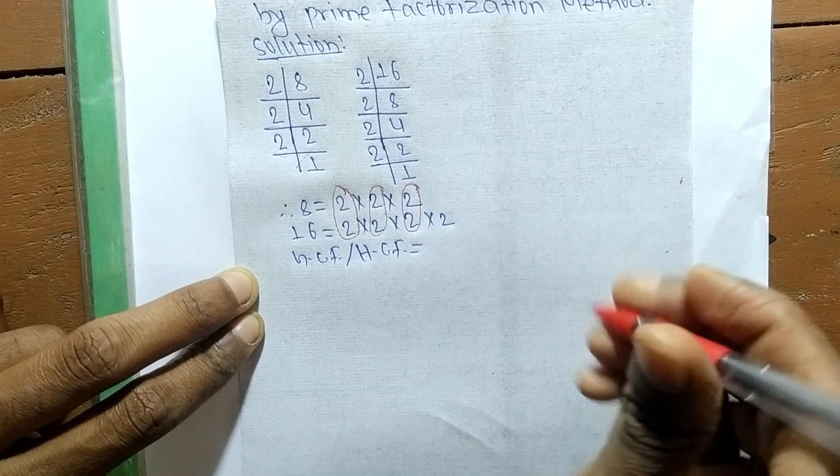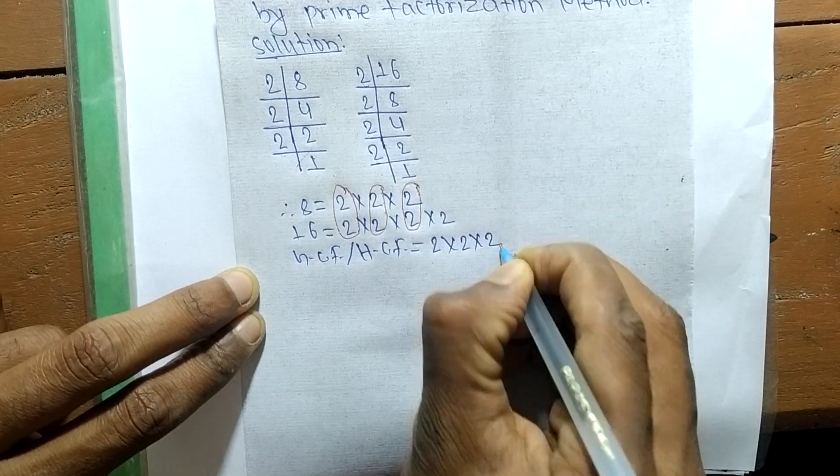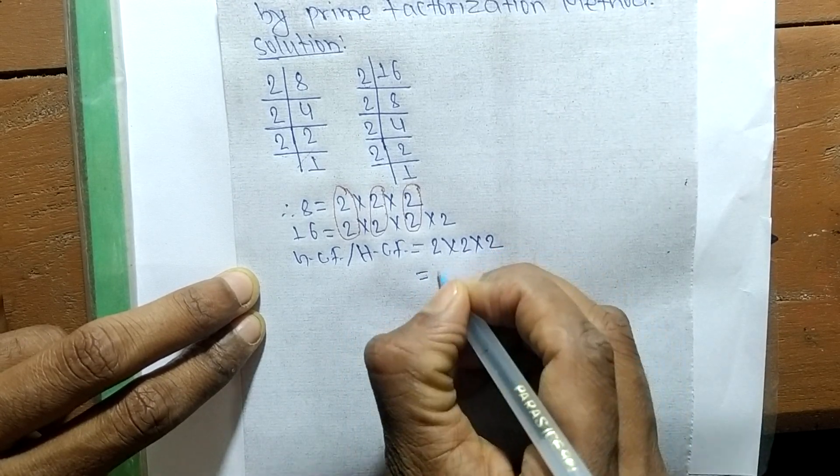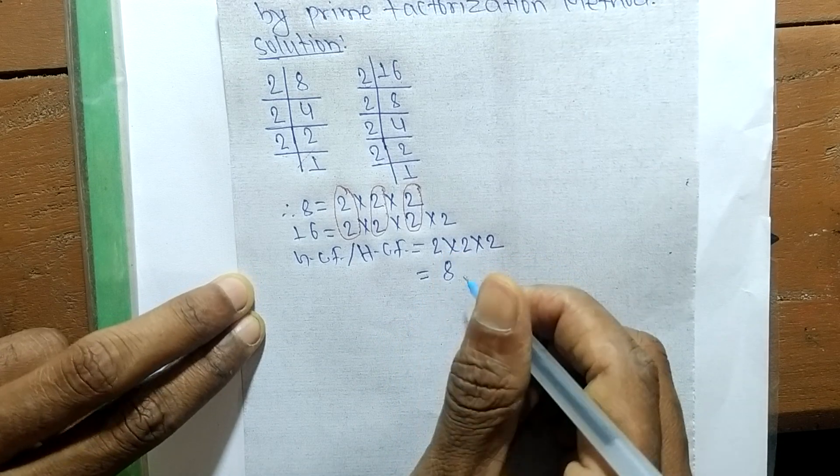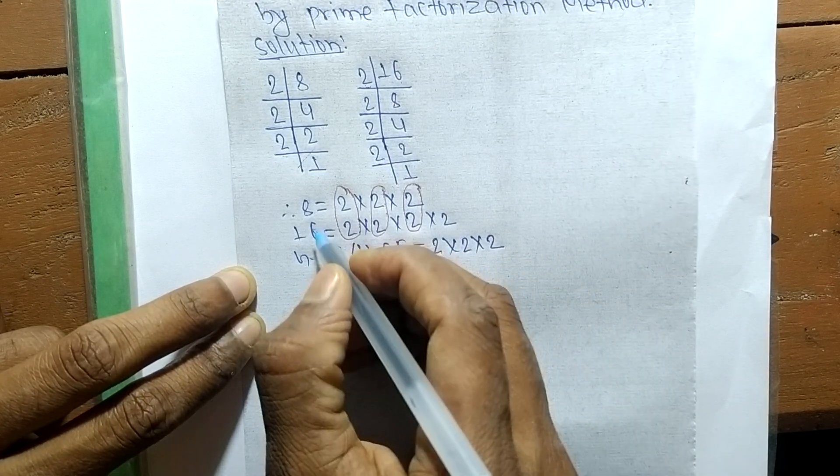So it is equal to 2 times 2 times 2. 2 times 2 means 4, and 4 times 2 means 8. So 8 is the GCF or HCF of 8 and 16.